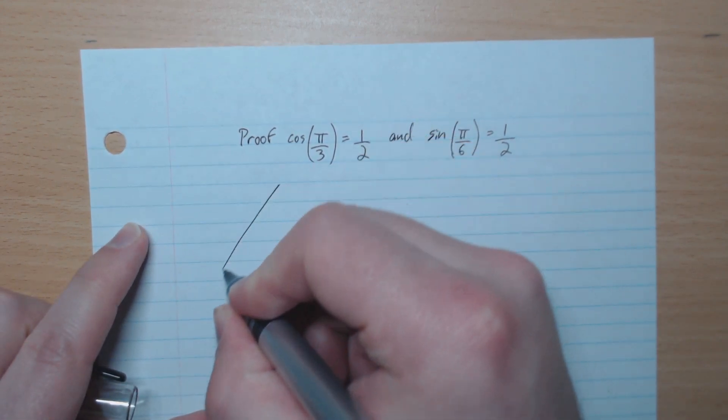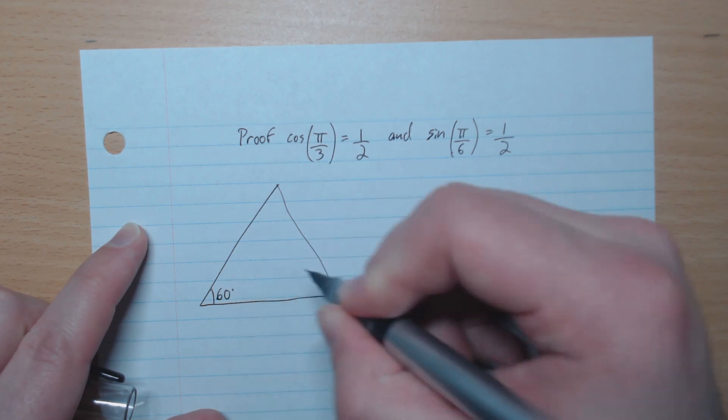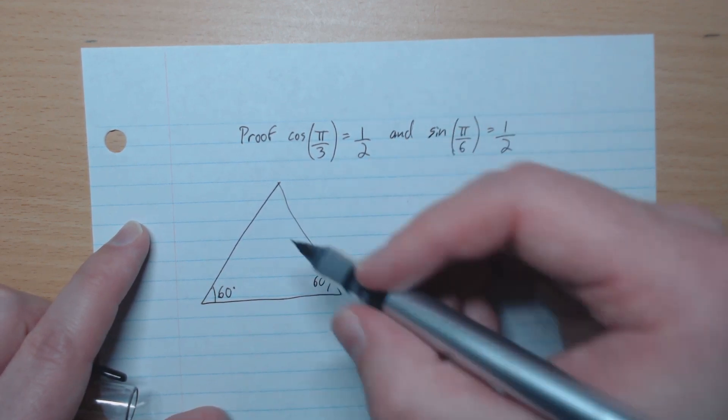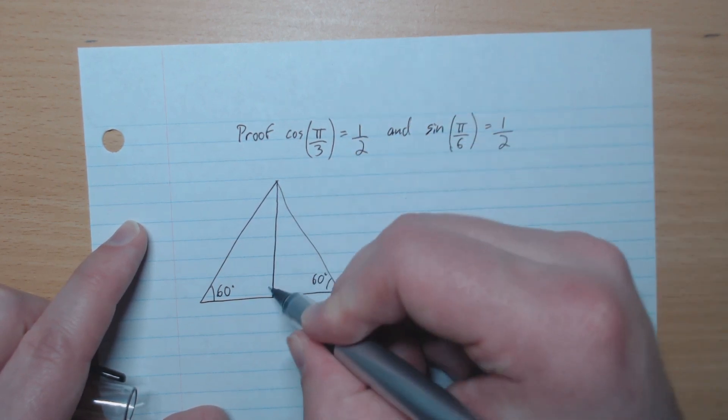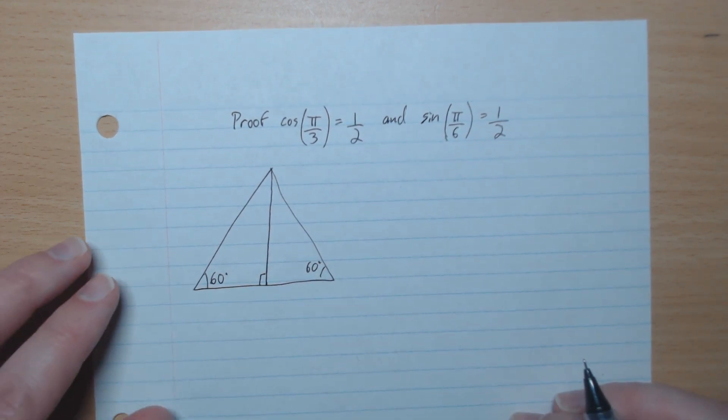So we'll start by constructing an equilateral triangle, and so there's 60 degrees on all three, and we're going to make this perpendicular bisector as such. So it's 90 degrees, and so by symmetry we have two right-angled triangles.